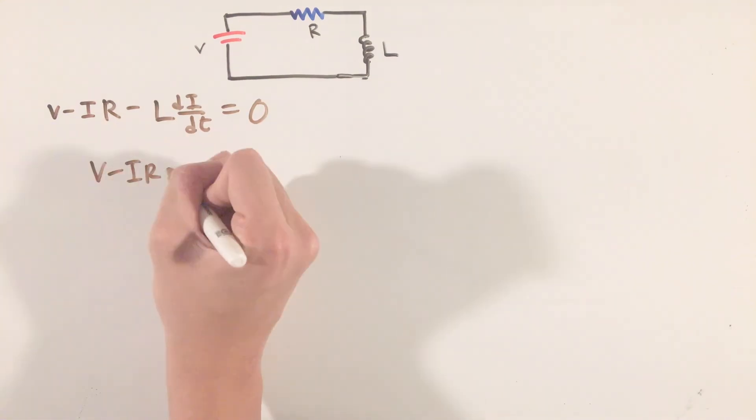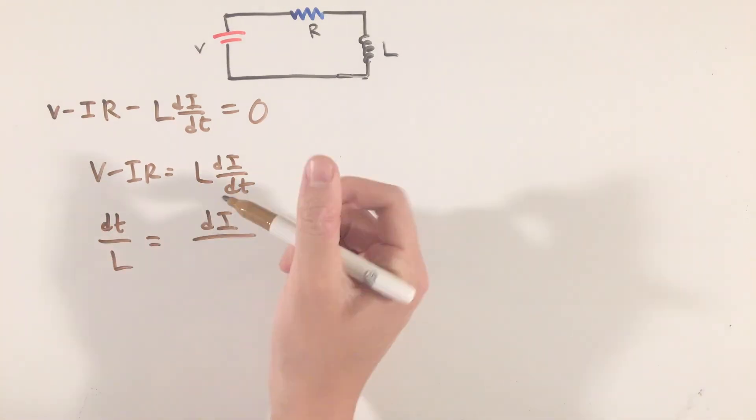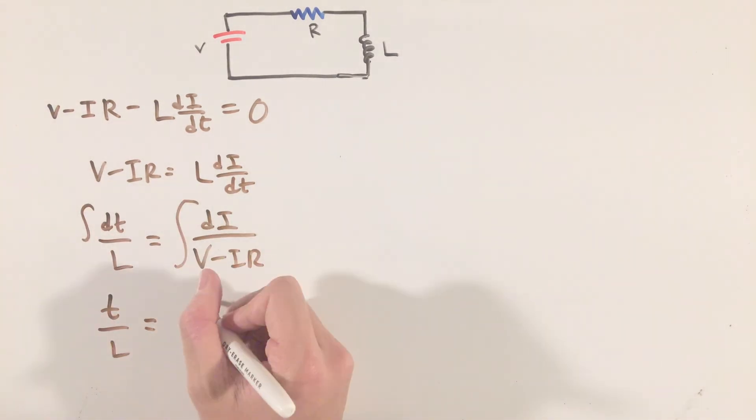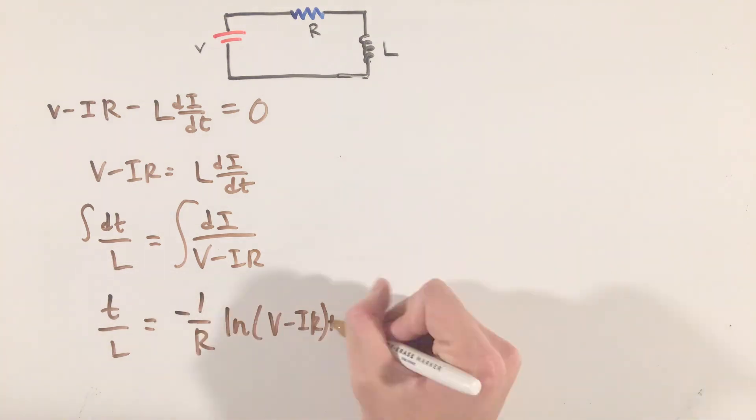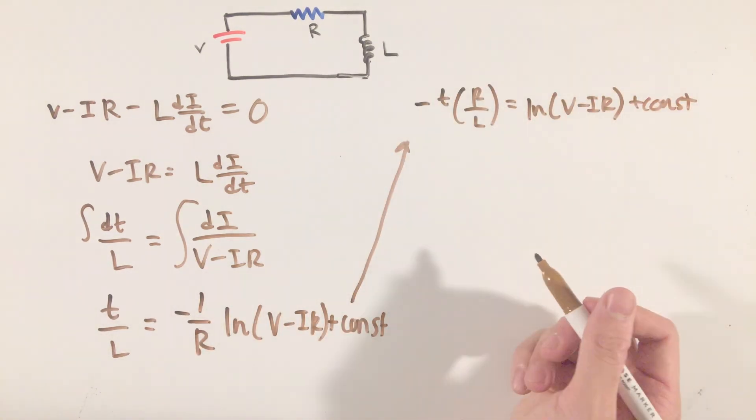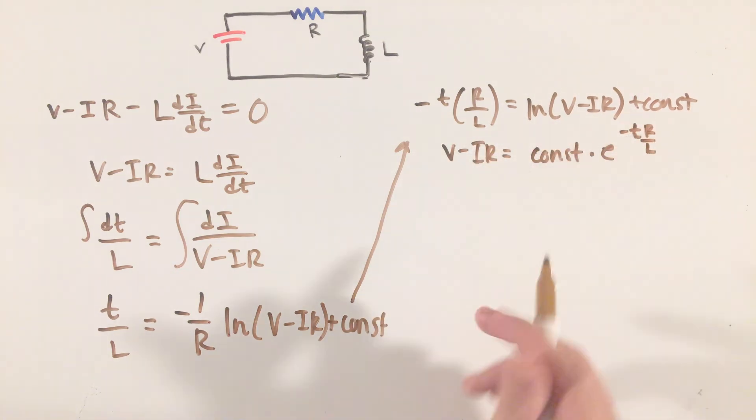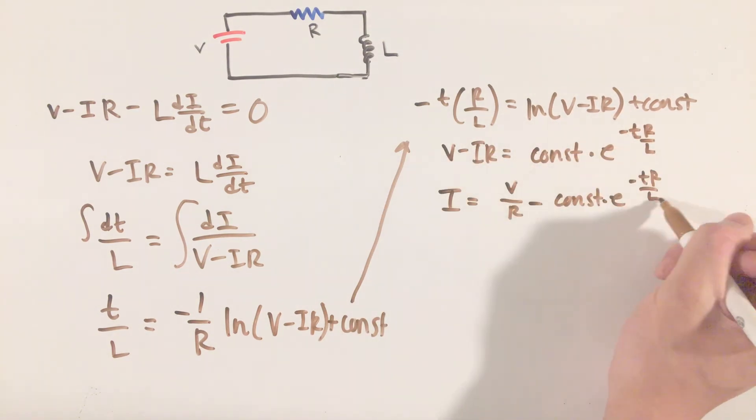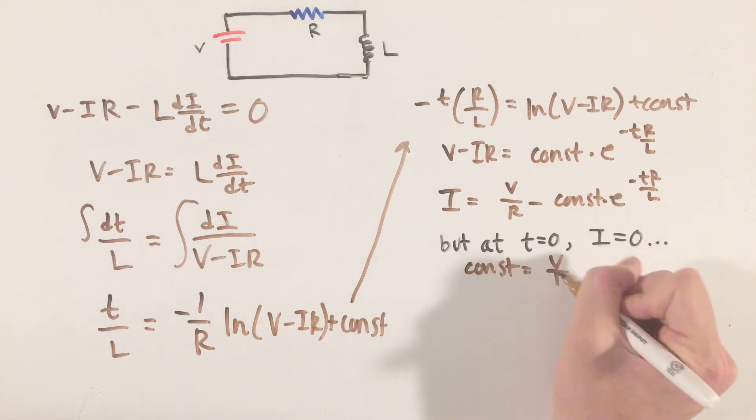Remembering that the potential difference across an inductor is the negative of the inductance times the rate of change of current, we can see that, like before, we have a differential equation with current instead of charge this time. Solving this equation using the fact that at time 0, the current should obviously start at 0 as well, we can arrive at an equation for the current across the circuit as a function of time.